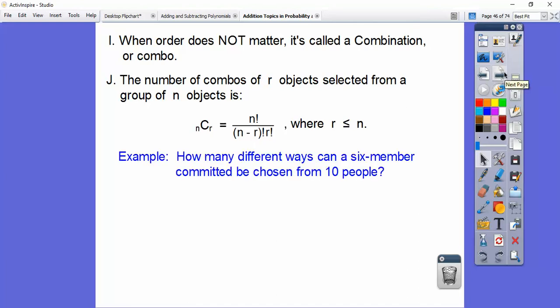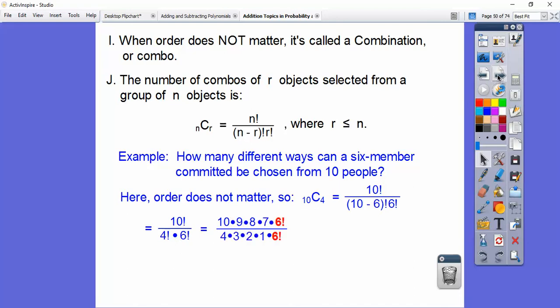For example, how many different ways can a six-member committee be chosen from 10 people? Here, order doesn't matter because it's just a six-member committee. If you're going to be on the committee, it doesn't matter if you're the first person or the second person or the third person. So since order doesn't matter, this is a combination. So this is 10C4. So it's 10 factorial over 10 minus 6 factorial times 6 factorial. Let's make that 4 factorial. And then I'm going to go 10, 9, 8, 7, 6 factorial because I got a 6 factorial. Always stop at the bigger factorial. And then you've got to write out the smaller factorial right there.